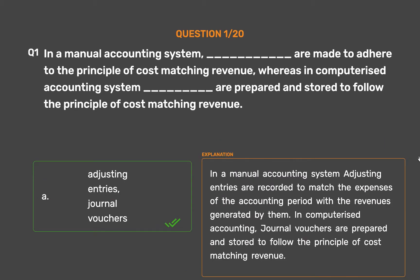In a manual accounting system, adjusting entries are recorded to match the expenses of the accounting period with the revenues generated by them. In computerized accounting, journal vouchers are prepared and stored to follow the principle of cost matching revenue.